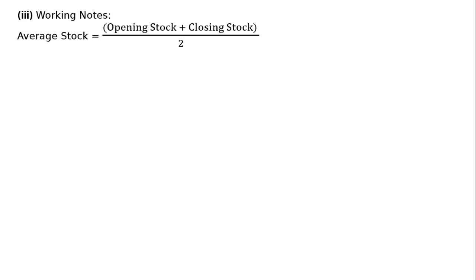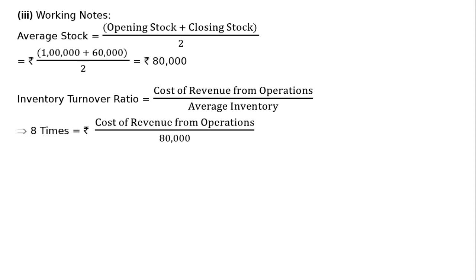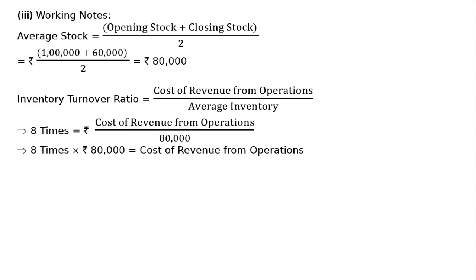Average stock equals opening stock plus closing stock divided by 2, that is Rs. 1,00,000 plus Rs. 60,000 divided by 2, which equals Rs. 80,000. Inventory turnover ratio equals cost of revenue from operations upon average stock. So 8 times equals cost of revenue from operations divided by Rs. 80,000. Cross multiplying, cost of revenue from operations equals Rs. 6,40,000.